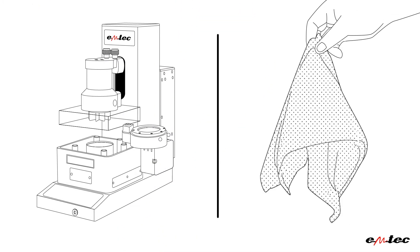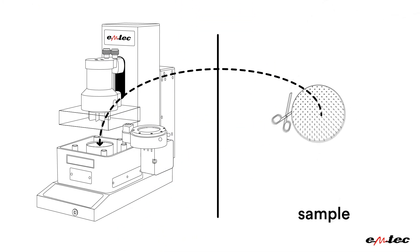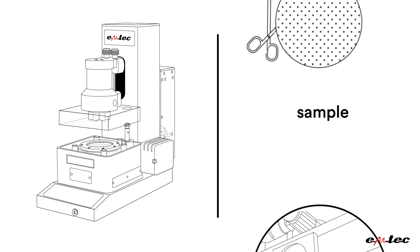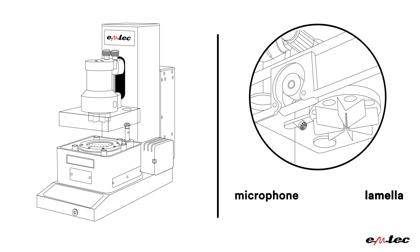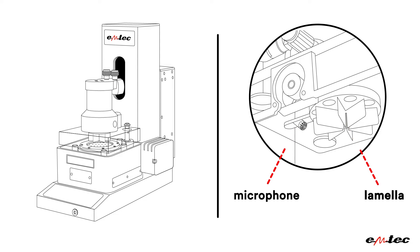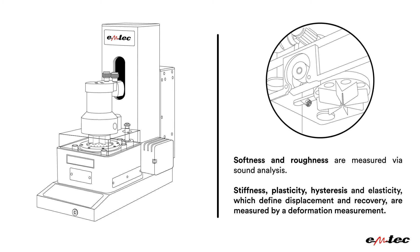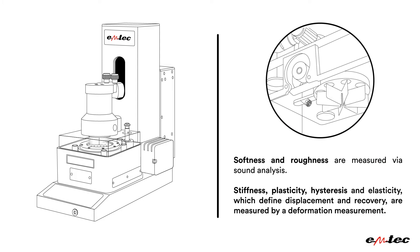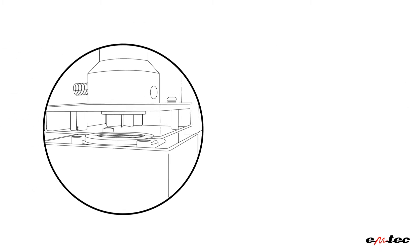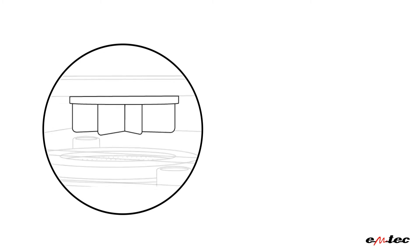After cutting the sample to the optimal size of 100 square centimeters, it is fixed onto the device and the measurement can start. Softness and roughness are measured by a sound analysis. Stiffness, plasticity, hysteresis, and elasticity are measured by a deformation measurement. All results are available after only one and a half minutes.